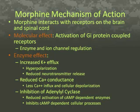Morphine acts by binding to specific receptors located throughout the central nervous system. The major types of opioid receptors associated with morphine are mu, kappa, and delta.